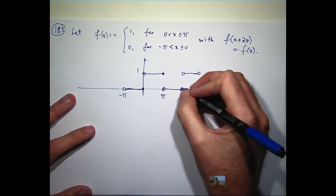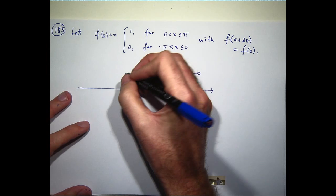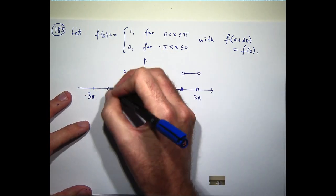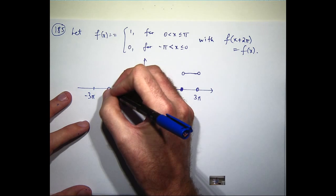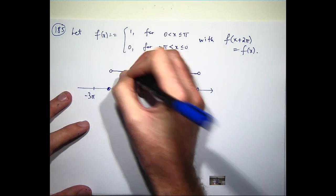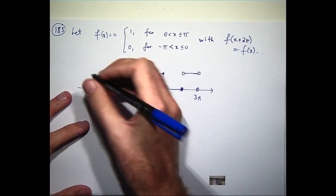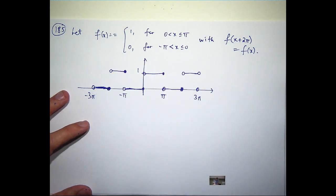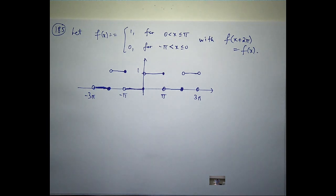Here's my function on the interval minus pi to pi. So let's copy it and paste it, copy it and paste it. And I'll just draw it on the interval minus 3 pi to 3 pi. And I'll just continue this over here. Not a very good drawing, but hopefully you can get the idea.